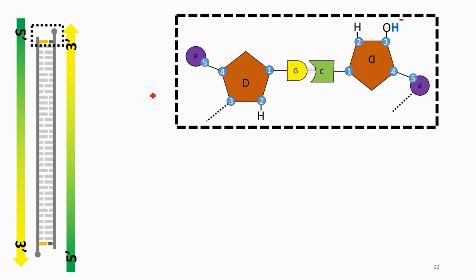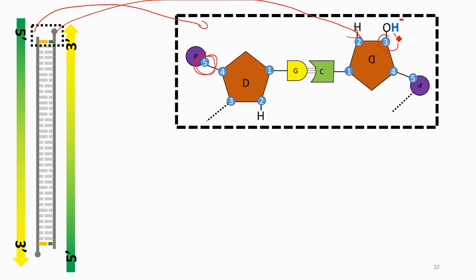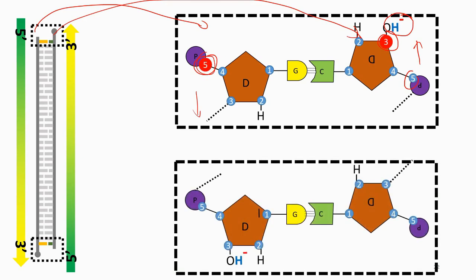Looking at the DNA strands, you can see one runs 5' to 3' and the other runs in the opposite direction — 5' to 3' as well but antiparallel. So at the bottom, the strands run in opposite directions. When extension happens, it proceeds from 5' to 3'.